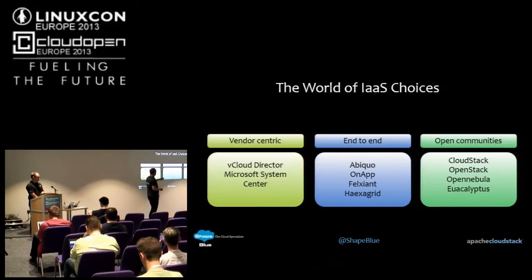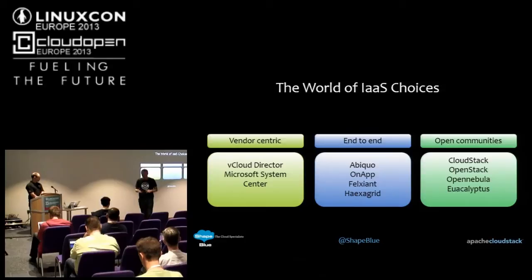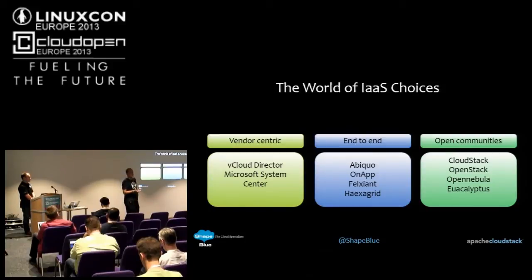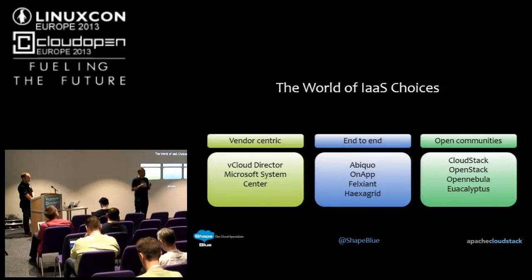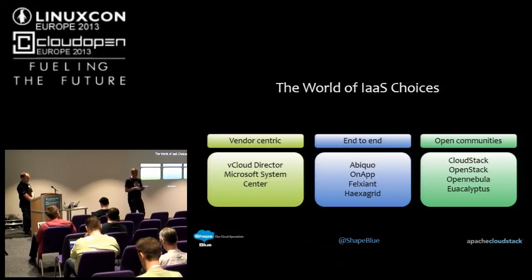The middle-ground guys will continue to do their value-add aimed specifically at service providers, but are now starting to look at the open communities to do the heavy lifting of cloud orchestration. With infrastructure as a service, you want to support multiple hypervisors, the latest storage OS versions, and whatever networking devices come along. You need people to easily contribute to that code, so it needs to be an open community where vendors, individuals, and third parties can contribute. That's why I see a heavy shift in the IaaS space towards the open-source communities.